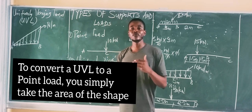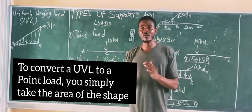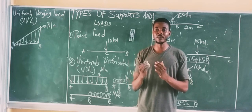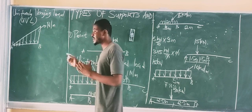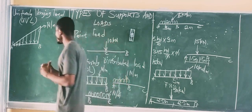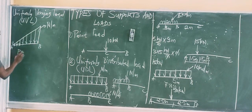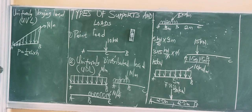To convert a UVL to a point load, take the area of the triangular shape. The point load for every UVL is the area of the triangle, which is ½ × base × height. This becomes the equivalent point load of the UVL.